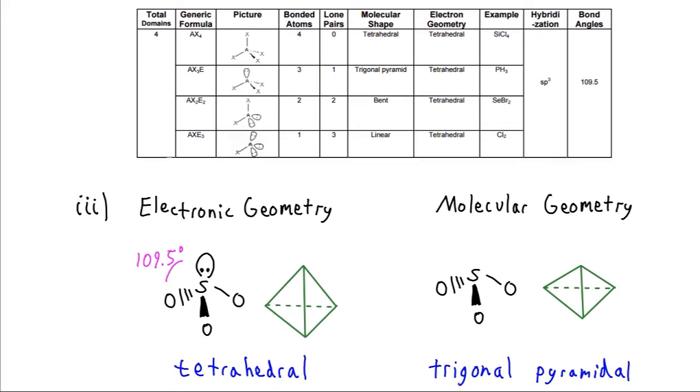And our VSEPR chart will give us other useful information, things like the hybridization of the orbitals or the bond angles. So we know that these bond angles here should be 109.5, or fairly close to it. We're going to see some reasons why this might deviate from being exactly 109.5.